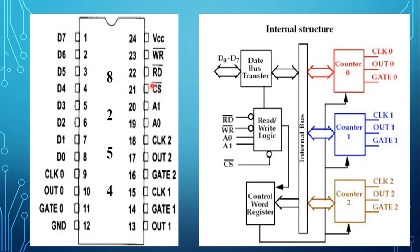Pin number 21 is the chip select signal. When active low, it enables the 8254 to respond to read or write signals; if high, read and write are ignored. Pin number 22 is the read signal, which is active low during a CPU read operation. Pin number 23 is the write signal, which is active low during a CPU write operation.